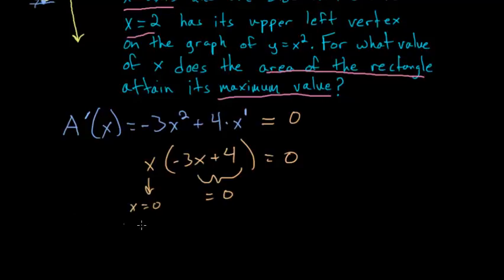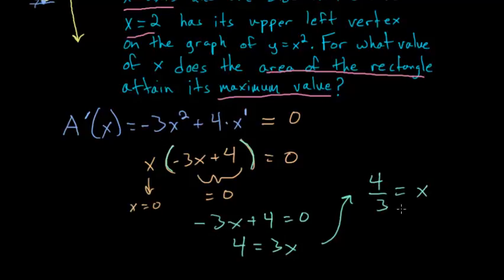So the maximum value of our area function will come from this expression here. So we can say that minus 3x plus 4 is equal to 0. Adding 3x to each side, we have 4 equals 3x. And then dividing each side by 3, we find that x equals 4 thirds. So this is the value of x that the area of the rectangle will attain its maximum value.